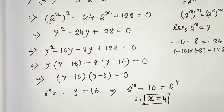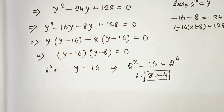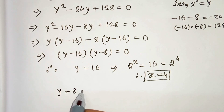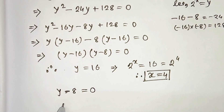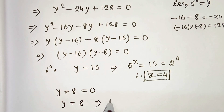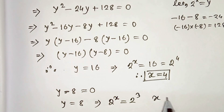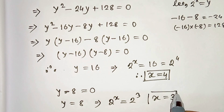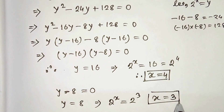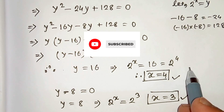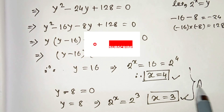This is our first solution. From the other factor, y minus 8 equals 0, therefore y equals 8, which gives 2 to the power x equals 8, and 8 is 2 cubed, therefore x equals 3. So we have two solutions: x equals 4 and x equals 3. Thanks for watching.